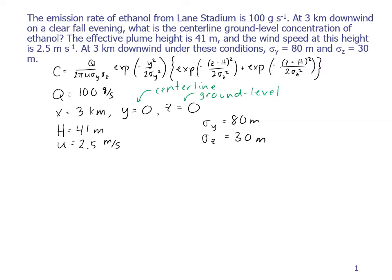But we can go ahead and just substitute these values into the equation. So C is equal to Q, or 100 grams per second, divided by 2 times pi times U, which is 2.5 meters per second, times sigma Y, which is 80 meters, times sigma Z, which is 30 meters.